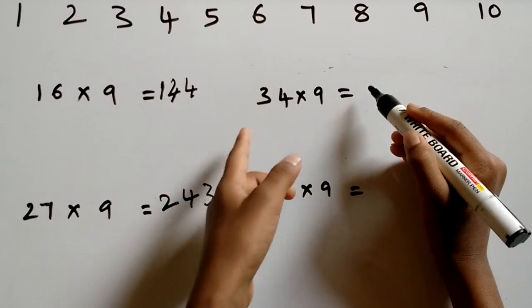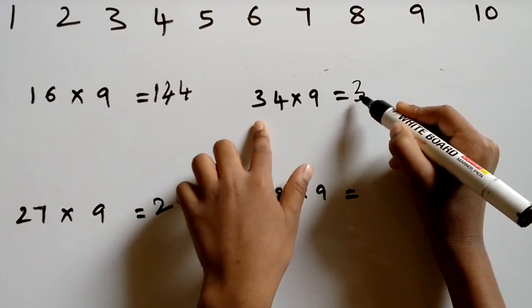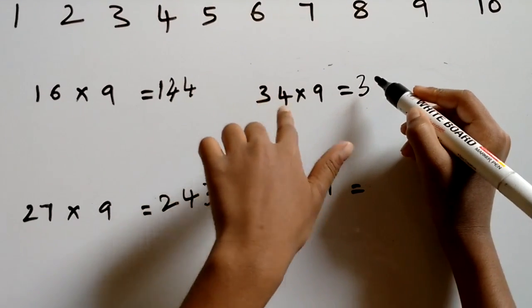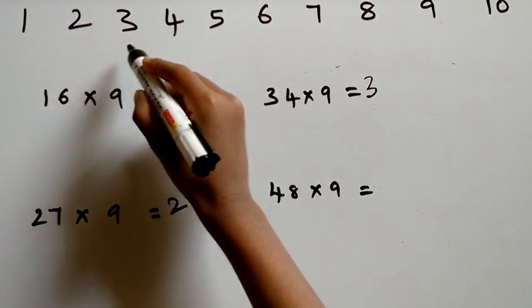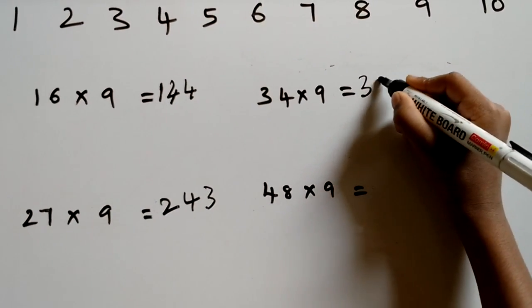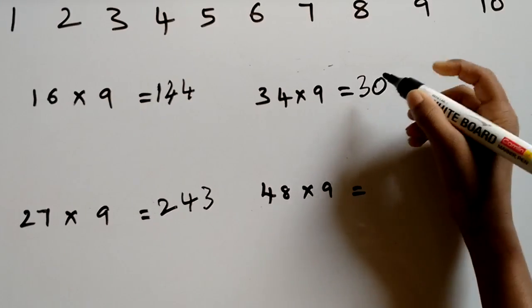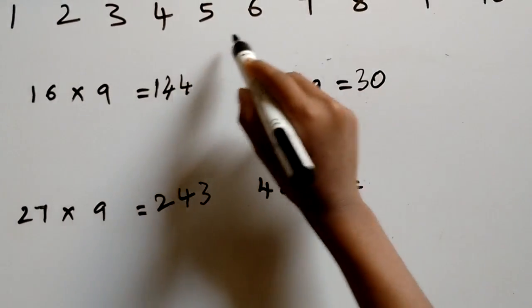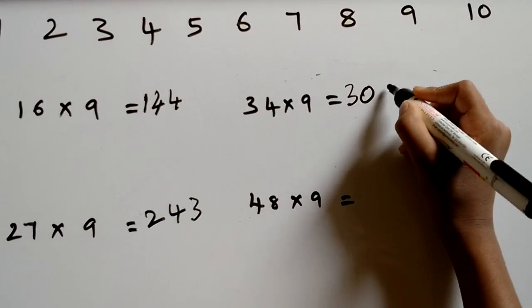34 nines are. First write 3. Between 3 and 4 there are no numbers. So write 0. After 4 there are 6 numbers. So write 6.